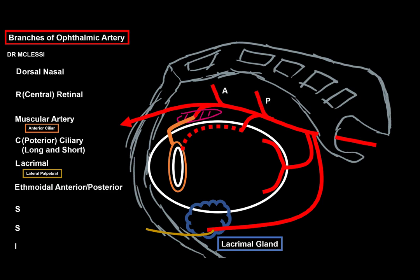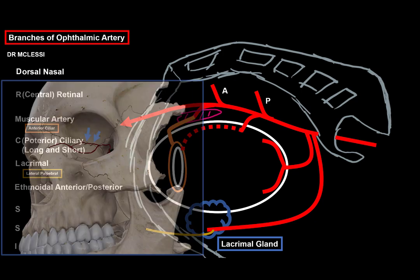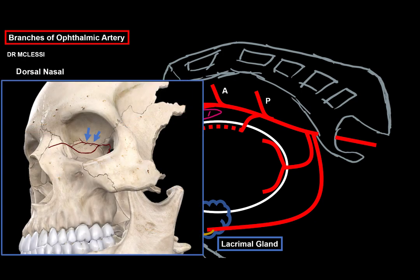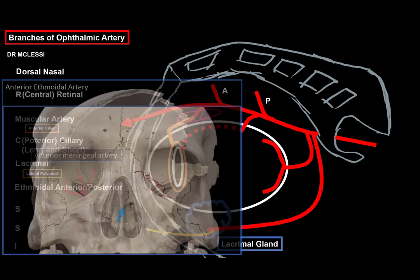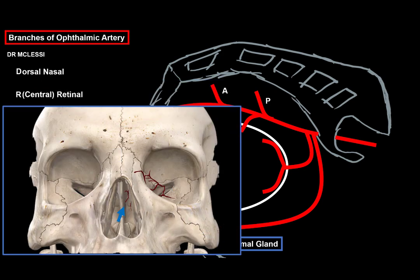Next E for ethmoidal arteries. There are the anterior and the posterior ones. They run through the ethmoidal foramen, as you see here, and then they both eventually end up in the nasal cavity. But the anterior ethmoidal will first run through the anterior cranial fossa to supply the anterior meninges. And then it will go down through the cribriform plate to meet up with the posterior ethmoidal, supplying the nasal cavity.